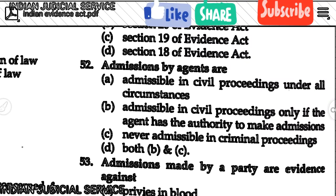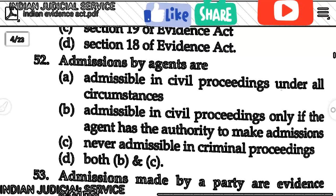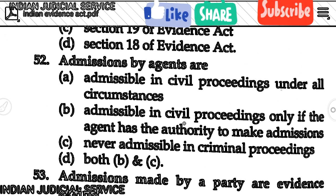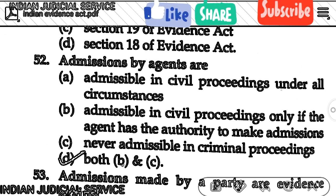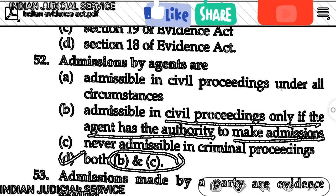Question number 52: Admissions by agents — the answer is D, both B and C are correct. Admissions by agents are admissible in civil proceedings only if the agent has the authority to make the admission, and are never admissible in criminal proceedings.